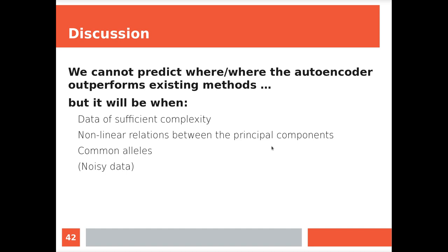So we don't still not know where or when the autoencoder outperforms existing methods. But we can predict that it might do so when the data have sufficient complexity, especially when there's a non-linear relationship between the principal components, because then it can beat PCA, the principal component analysis. There must be common alleles - on rare alleles it doesn't work. And probably if the data is noisy, because autoencoders are good with handling noisy data.